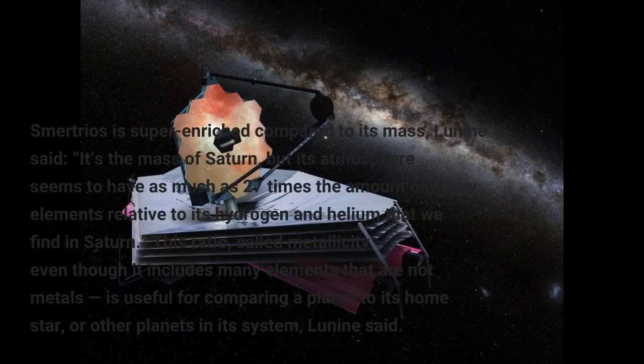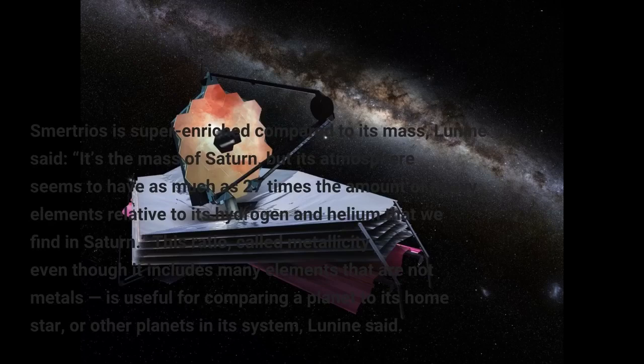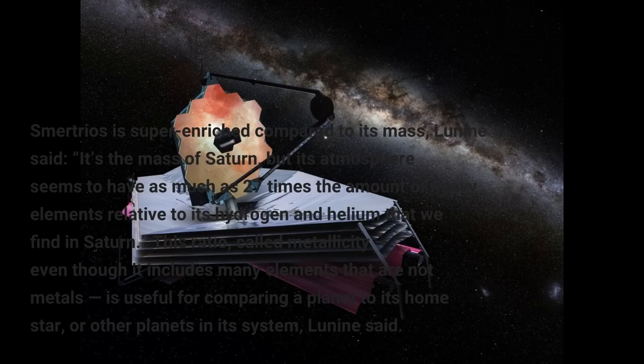Smertrios is super-enriched compared to its mass, Lunine said. It's the mass of Saturn, but its atmosphere seems to have as much as 27 times the amount of heavy elements relative to its hydrogen and helium that we find in Saturn. This ratio, called metallicity, even though it includes many elements.